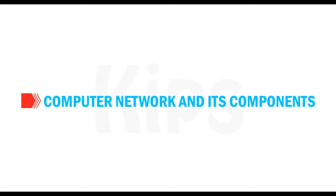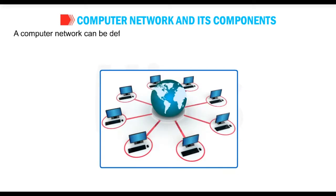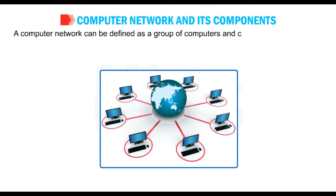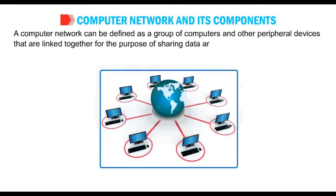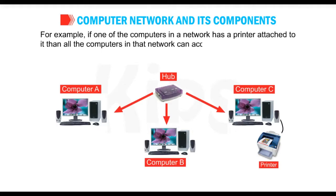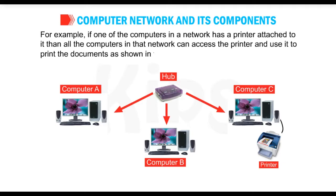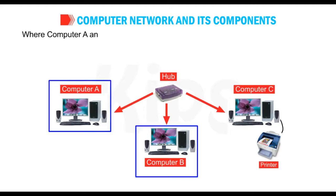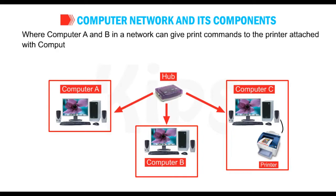Let us first talk about the computer network and its components. A computer network can be defined as a group of computers and other peripheral devices that are linked together for the purpose of sharing data and hardware resources. For example, if one of the computers in a network has a printer attached to it, then all the computers in that network can access the printer and use it to print the documents, as shown in the following figure, where computer A and B in a network can give the print command to the printer attached with computer C.